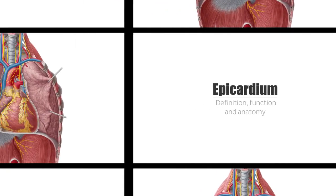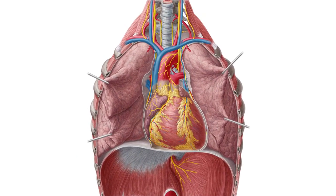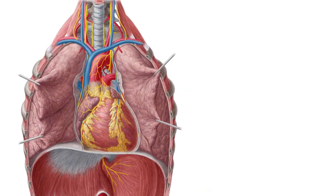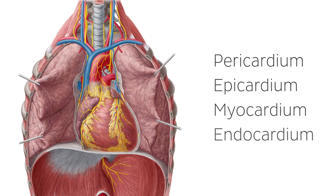The heart is a large muscular organ comprised of four different layers. From the outside to the inside, they are called the pericardium, the epicardium, the myocardium, and the endocardium. Each layer has a different function, which primarily aids the pumping action of the heart, allowing blood to flow through the body.